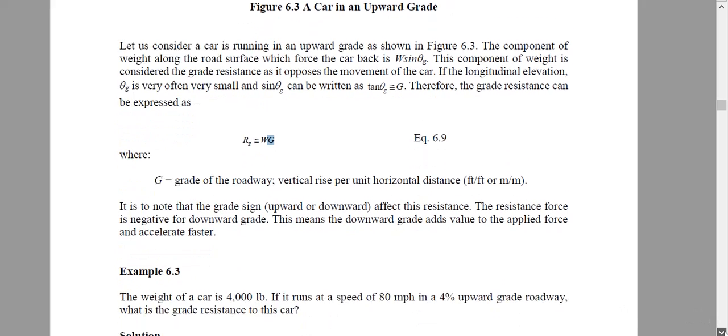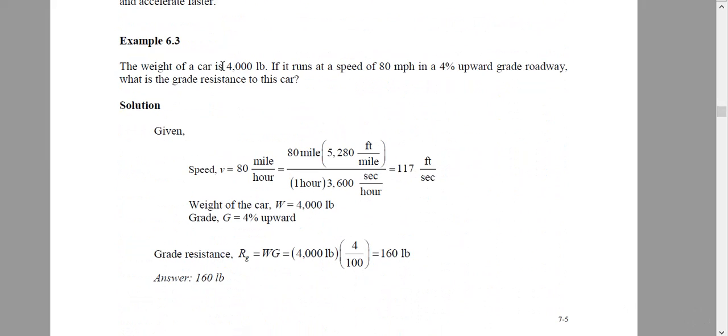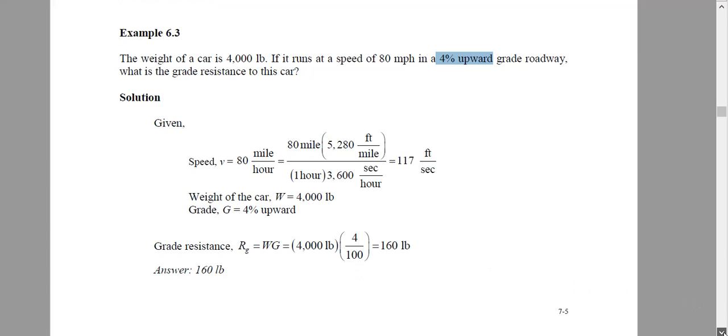We will see one example: a 4000 pound car has a speed of 80 mile per hour, four percent upward. Now upward means it will resist - that is a positive resistance. If it is downward it will help me - that is a negative resistance. So R_G is W times G. W is the weight. G means the slope, 4 by 100. It should be in decimal. This is the way to find grade resistance.